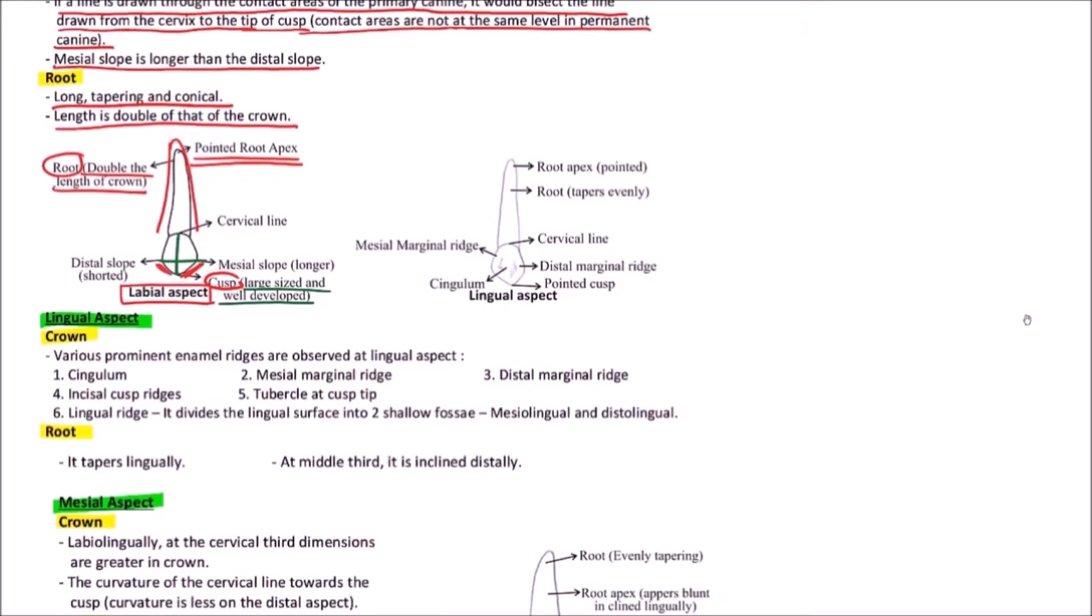Now the lingual aspect. Various prominent enamel ridges are observed at the lingual aspect. These are cingulum, mesial marginal ridge, distal marginal ridge, incisal cusp ridges, and tubercle at the cusp tip.